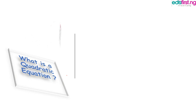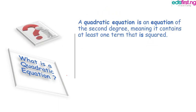So what then is a quadratic equation? If I may ask, it is an equation of the second degree, meaning it contains at least one term that is squared.